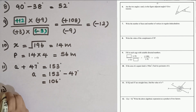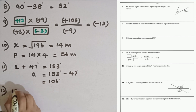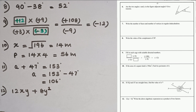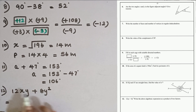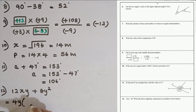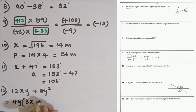Question number 12. Write the algebraic expression 12xy plus 8y² as a product of two factors. The common factor here: considering the numerical terms, 4 is common. X is not common to both terms, but y can be taken out. Dividing 12xy by 4y gives 3x, and 8y² divided by 4y gives 2y. So the two factors are 4y and (3x plus 2y).